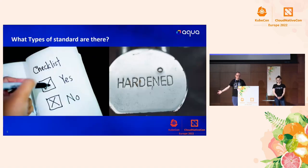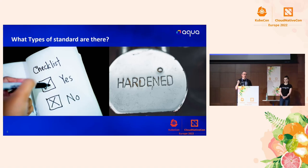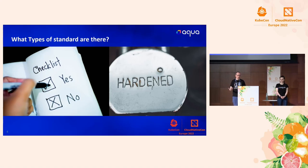When thinking about types of standards, there are essentially two different types. The first ones are checklists. You can spot a checklist because it will typically have specific guidance in numbered sections with specific actionable settings — like you will set this setting to this value. It will have a fail and a pass, with audit guidance and remediation guidance. Those are compliance checklists, really targeted at people being able to say: is this product configured in a way that complies with this document? And then we have hardening guides.